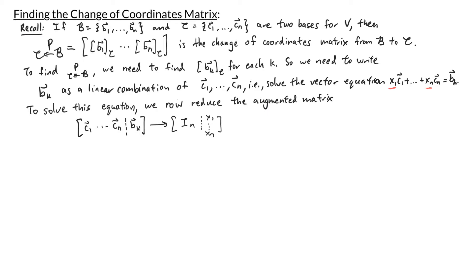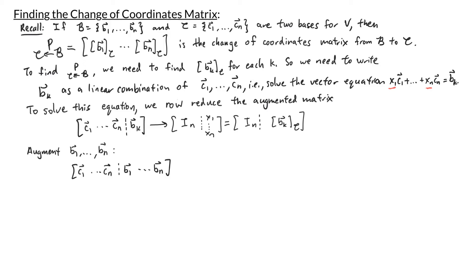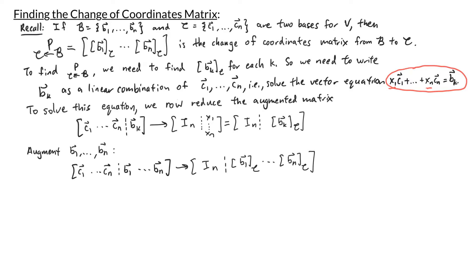Once I row reduce the augmented matrix [c1 ... cn | bk], I end up with the identity matrix augmented with the C coordinate vector for bk. The row operations needed to get the identity on the left do not depend on bk. So I can augment all of the vectors b1 through bn simultaneously. When I row reduce this, once I get the identity on the left, on the right I'll have the C coordinate vectors for b1 through bn — and that's the change of coordinates matrix P from B to C.